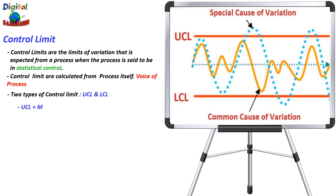The upper control limit is calculated as the mean plus three times the standard deviation, and the lower control limit is calculated as the mean minus three times the standard deviation.